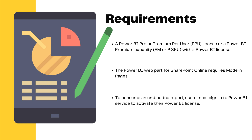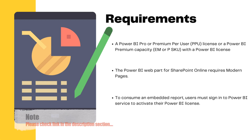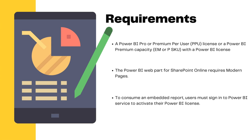Now let's discuss the requirements for embedding a report web part in SharePoint Online. The very first requirement is a Power BI Pro or Premium Per User license, or Power BI Premium Capacity like EM or P SKUs with a Power BI license. Secondly, the Power BI web part for SharePoint Online requires modern web pages. I'll provide a link in the description so you can check. SharePoint has two kinds of web pages — classic and modern — and this feature can only work on modern web pages.